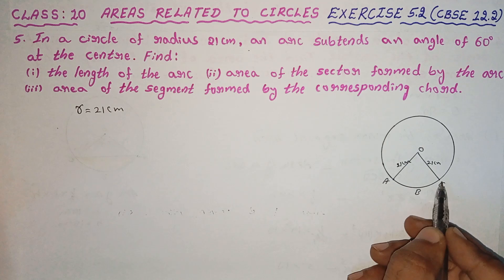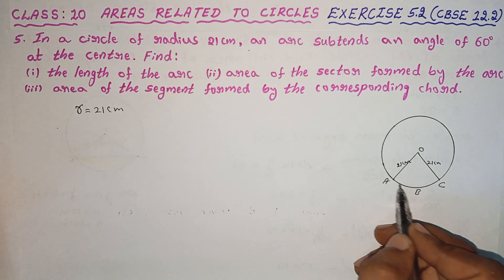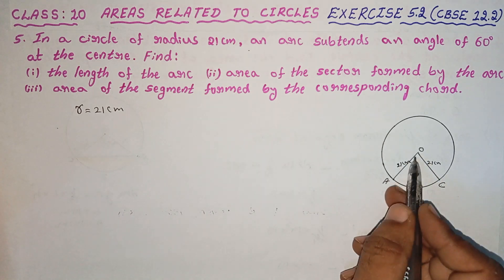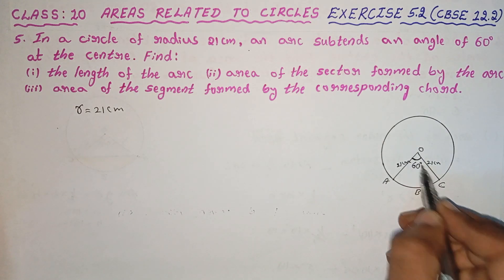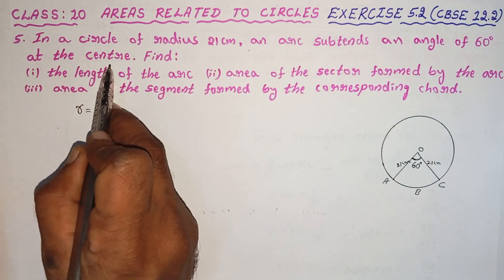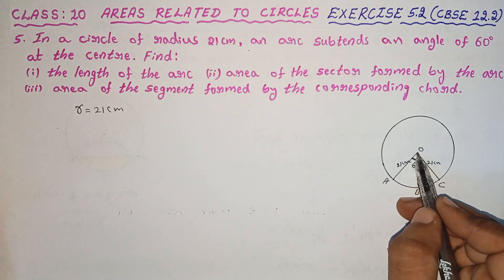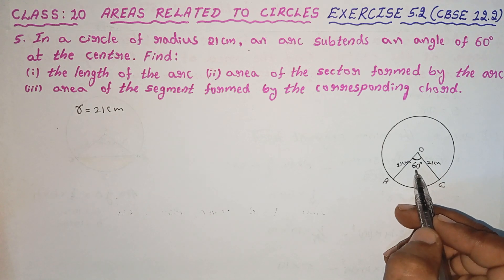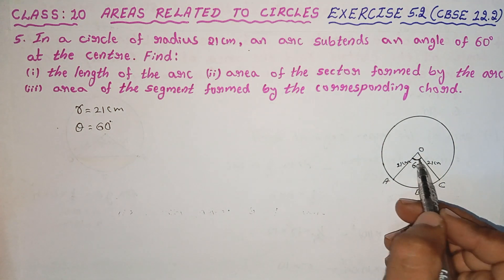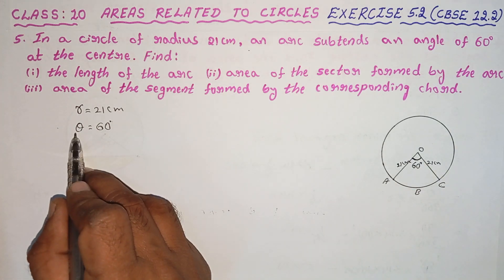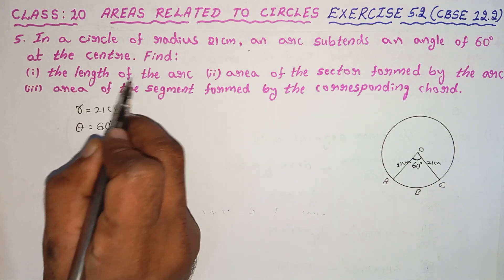Here, the arc ABC is part of the circle. This arc has its endpoints on the radius from the center. The arc subtends an angle at the center. The angle of the sector, theta, is equal to 60 degrees. So the angle of the sector theta is equal to 60 degrees.